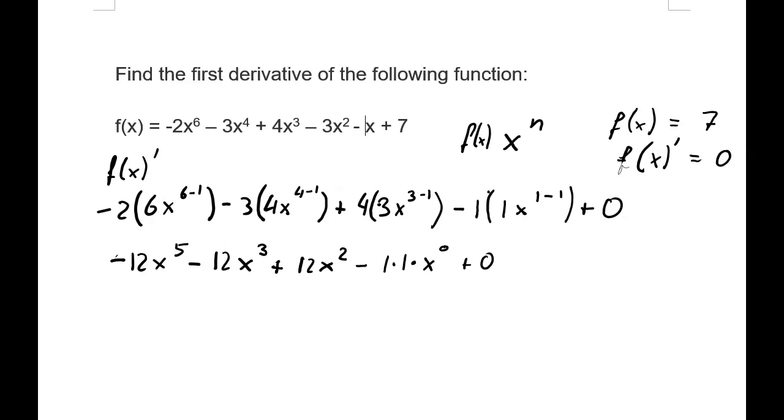We can simplify this because any number to the power of 0 is 1. So we would get 1 times 1 times 1, which gives us negative 1.